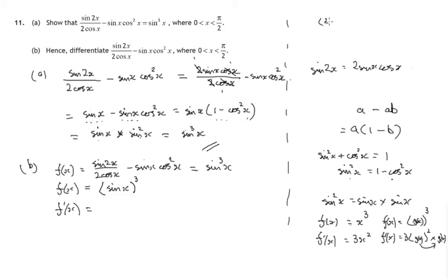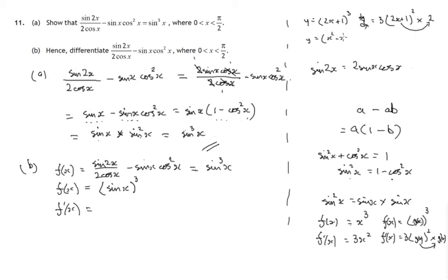As an example, suppose we had (2x + 1) cubed and we wanted to differentiate that. We'd get 3 times that squared — there's your power rule. But the adjustment: differentiate what's inside the bracket. This time it's 2x + 1, and if you differentiate 2x + 1 you get 2. Another example: if you had (x squared minus x) cubed, you'd apply the power rule as normal, but then differentiate x squared minus x, so your adjustment would be 2x minus 3x squared. It gets quite complicated.